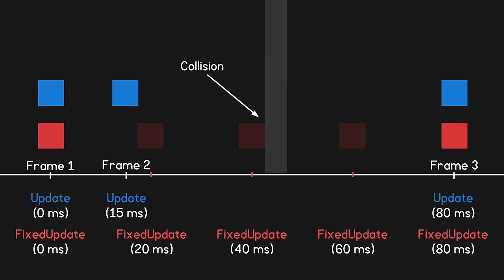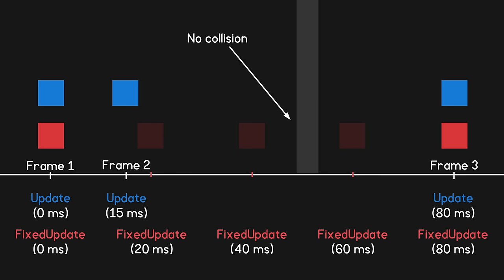If the object is moving very fast, it's still possible that it won't collide with the wall even in fixedUpdate. To rectify this, we could increase the rate at which fixedUpdate is called, making it say every 5ms instead of every 20. Obviously this would come with a huge cost in processing power, so in later episodes we'll discuss techniques for dealing with very fast moving objects such as bullets — but for the vast majority of cases, fixedUpdate every 20ms will handle collisions just fine.